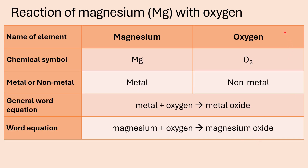The first reaction we are going to study in more detail is the reaction of magnesium with oxygen. Magnesium's chemical symbol is Mg. Oxygen gas is O2. Magnesium is a metal; oxygen is a non-metal. When a metal reacts with oxygen, a metal oxide is formed. The word equation is: magnesium plus oxygen forms magnesium oxide.